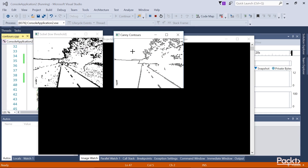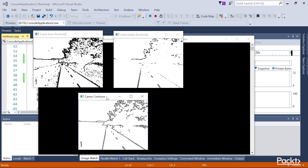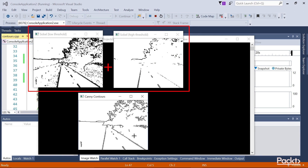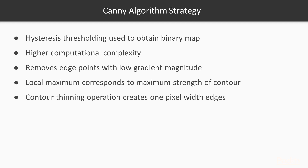The Canny algorithm combines these two edge maps to produce an optimal contour map. It operates by keeping only the edge points of the low threshold edge map for which a continuous path of edges exists linking those points to an edge belonging to the high threshold edge map. This strategy — using two thresholds to obtain a binary map — is called hysteresis thresholding, and can be used in any context where a binary map is needed, though at the cost of higher computational complexity.